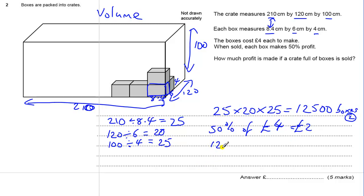And we've got 12,500 boxes. £2 profit each. We're asked to work out the total profit from selling all the boxes. Times those two together, we get £25,000. And that's the answer.